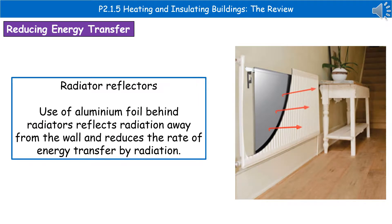Another technique we can employ is using radiator reflectors. These come in various types — some are rolls of silvery material, others are metal sheets. The idea is that you put them behind the radiator, and they reflect radiation away from the wall and back into the room, reducing the rate of energy transfer by radiation.